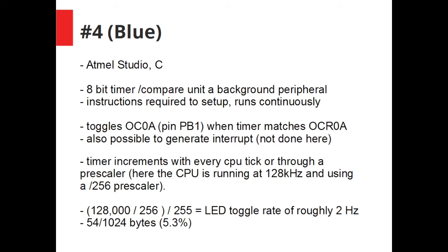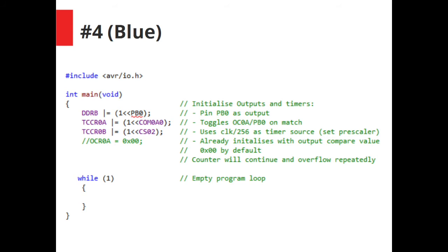The fourth microcontroller with the blue LED is running an arguably more native approach to blinking an LED using the 8 bit timer and compare unit module. Now this runs continuously in the background so other code can execute so all you have to do is set it up and it keeps running while the microcontroller is alive. What it does is toggles one of the pins when the timer matches a certain value and it's also possible to generate an interrupt routine to do more complex things. You might use this mode for example for PWM.